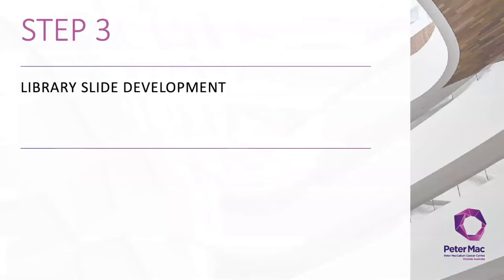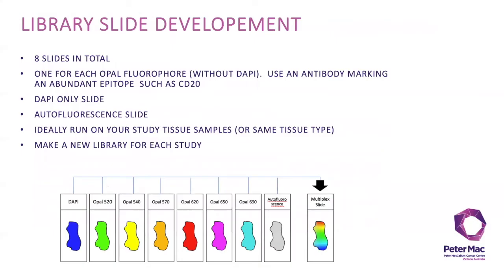The next step is to prepare your single stain control library slides. These will be used to build your spectral library in inForm and are necessary for accurate spectral unmixing and analysis of your monoplex and multiplex slides. You'll need a total of eight slides for this step: one slide stained with each of your Opal fluorophores alone without DAPI — here you will need to use an antibody marking an abundant epitope such as CD20, as the emission spectra collected from these slides are less subject to issues related to sparse or low signal levels. You'll also need one control slide stained with DAPI only, and lastly one unstained control tissue slide for the assessment of autofluorescence. The unstained slide should be processed in the same way as the other slides, permitting both Opal fluor and DAPI.